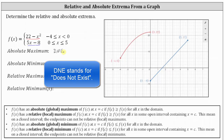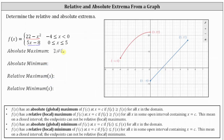Now let's see if we can identify the lowest point on the graph. The point 0 comma negative 8, this closed point, is the lowest point on the graph of the entire function. Therefore, the function value of negative 8 is the absolute minimum, because negative 8 is less than or equal to all the other function values given by f of x.